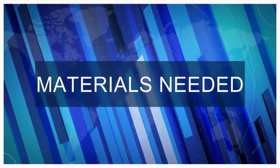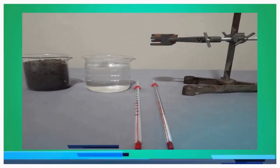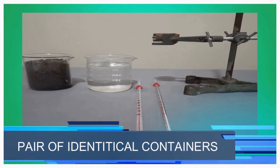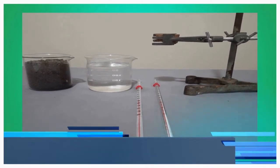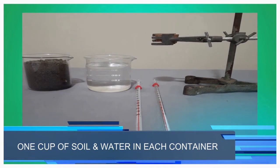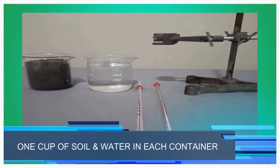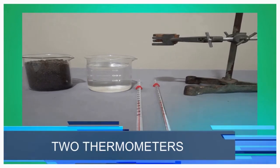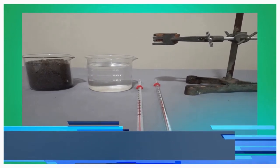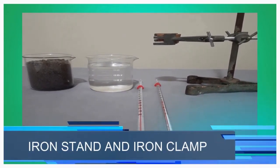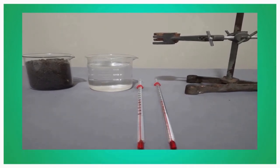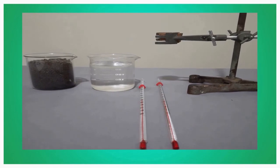These are the materials needed for this experiment: a pair of identical containers — you can use any containers at home as long as they are identical — filled with one cup of soil and water each. Two thermometers — you can use digital thermometers at home. An iron stand and iron clamp, or any materials at home that can hold the thermometer during the experiment.